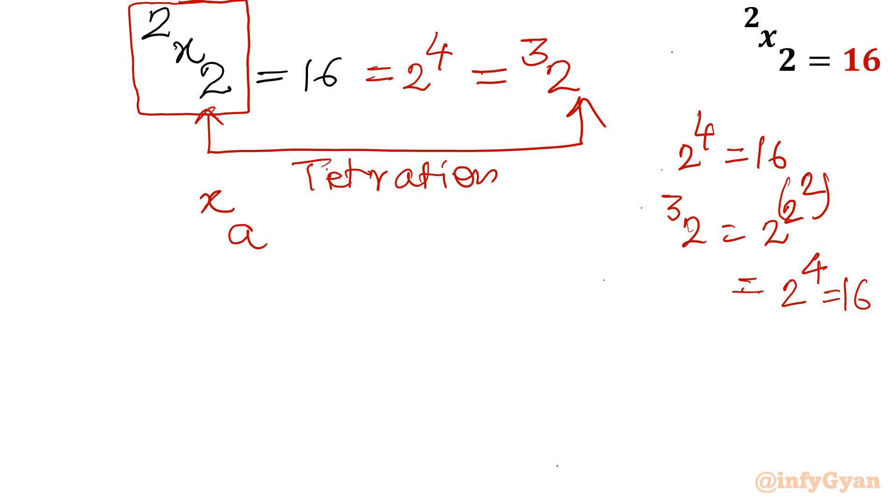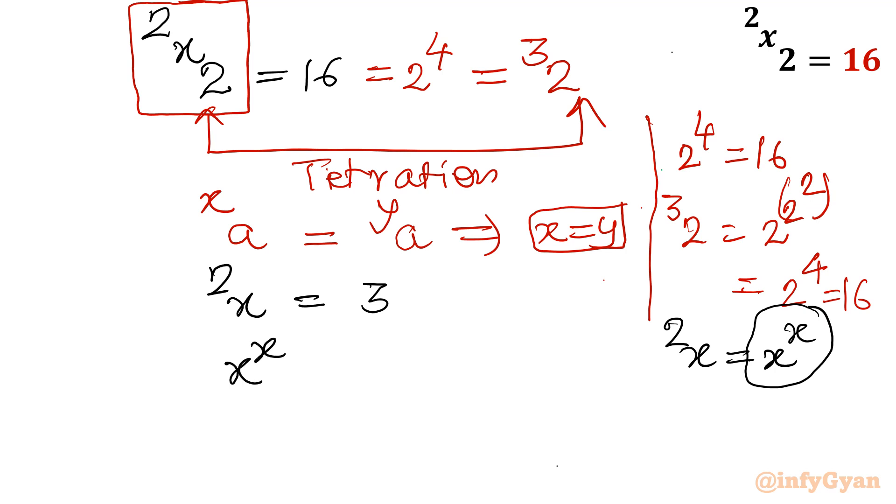Now we can compare. As the property a super power x equal to a super power y, conclusion is x is equal to y. Let's solve our equation. So I will compare both sides. I will write x super power 2 equal to 3. Now again I will apply x super power 2. Its meaning is exponentiation 2 times. So x power x is equal to 3.